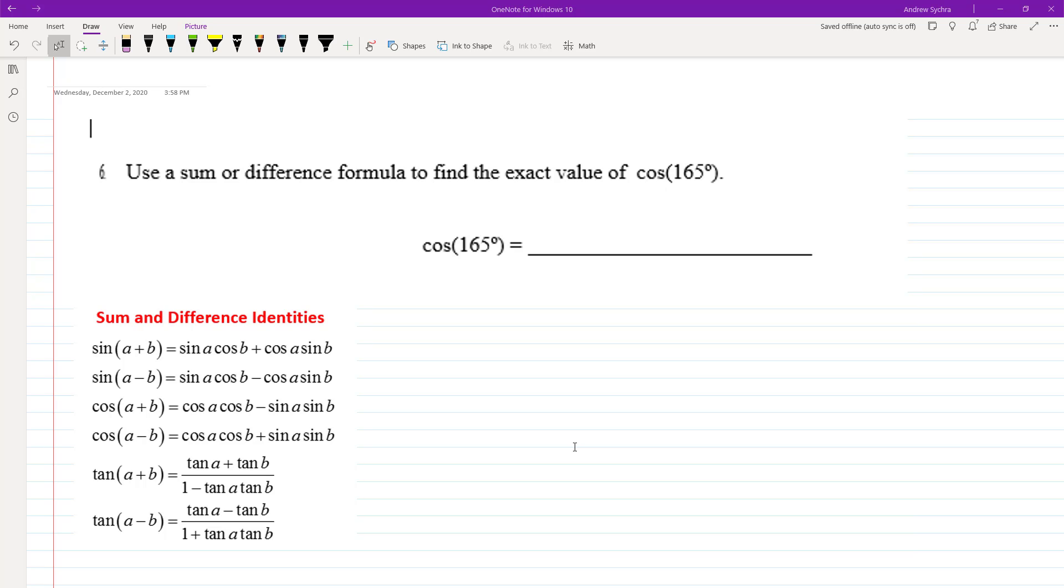In this case, two values that add up to 165 are 120 degrees and 45 degrees. We can label these A and B.